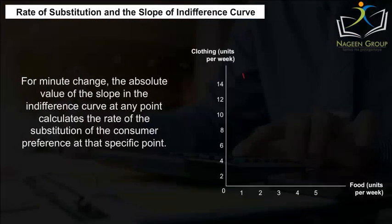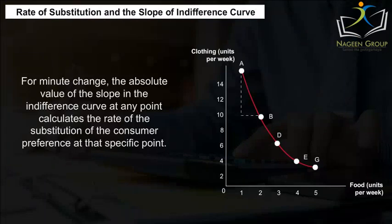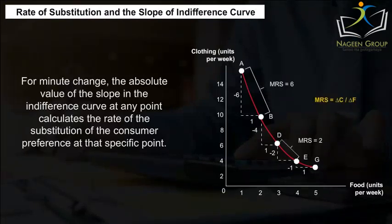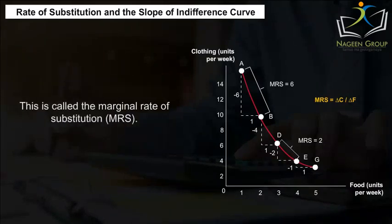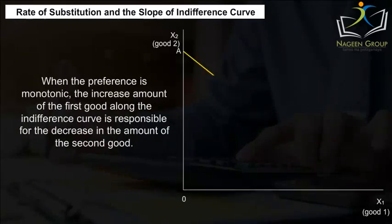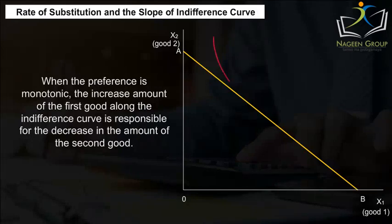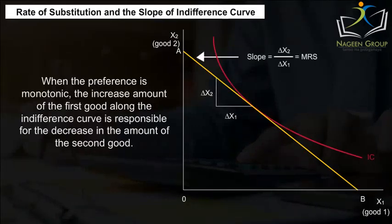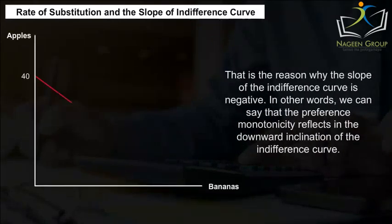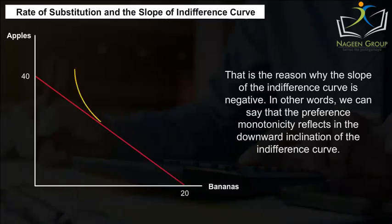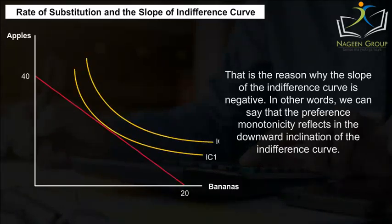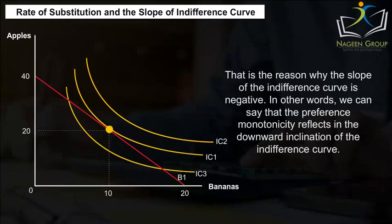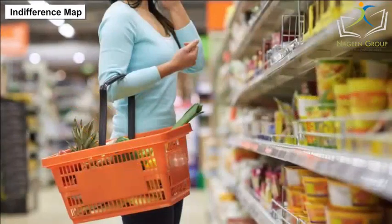For a minute change, the absolute value of the slope of the indifference curve at any point calculates the rate of substitution of the consumer's preference at that specific point. This is called the marginal rate of substitution, MRS. When the preference is monotonic, the increased amount of the first good along the indifference curve is responsible for the decrease in the amount of the second good. That is why the slope of the indifference curve is negative — in other words, preference monotonicity reflects in the downward inclination of the indifference curve.